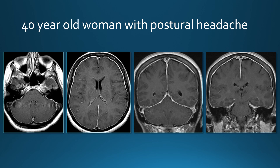A 40-year-old woman with postural headache. This patient does not have leptomeningeal enhancement — this is pachymeningeal enhancement. It's a very uniform pachymeningeal enhancement all around the skull and along the falx and tentorium. This very uniform, diffuse pachymeningeal enhancement is very typical for intracranial hypotension.